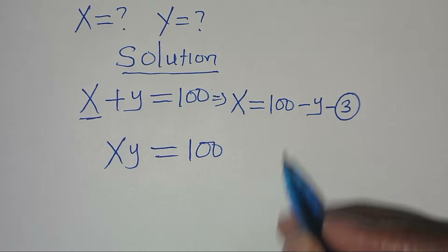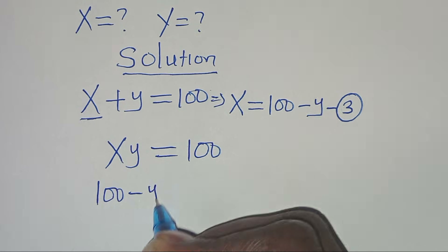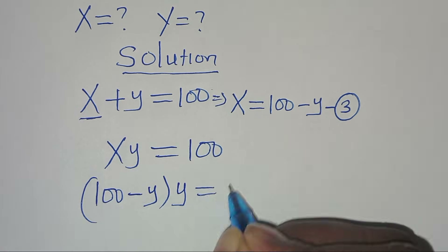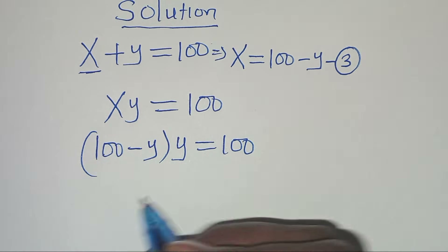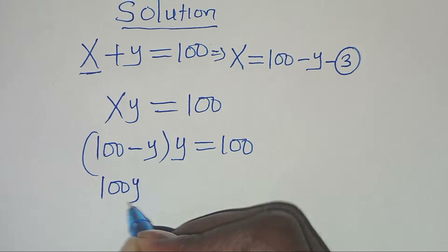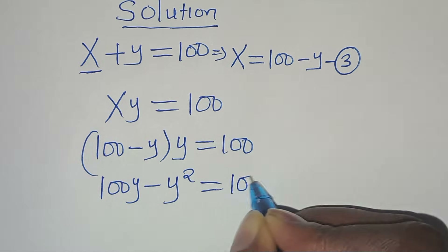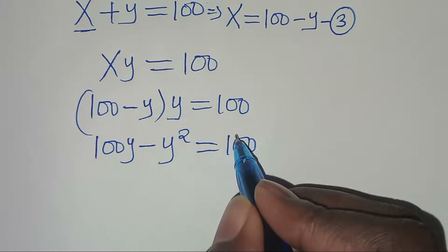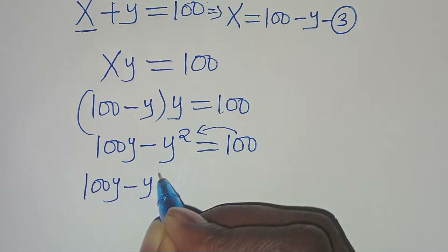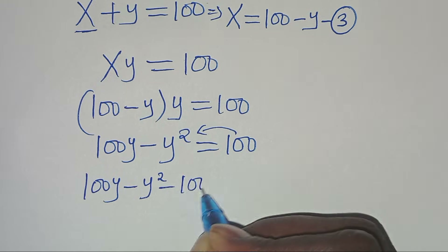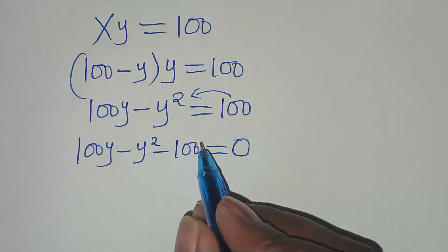Substituting x as 100 minus y, we have (100 minus y) multiplied by y equals 100. Opening the parentheses: 100y minus y squared equals 100. Moving 100 to the left-hand side gives us 100y minus y squared minus 100 equals 0.